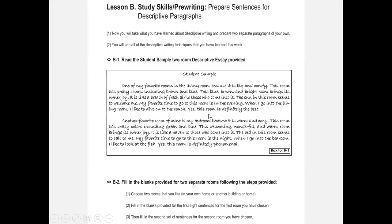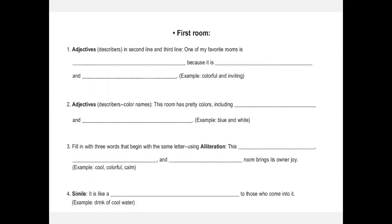The student sample continues for the second paragraph about the bedroom. Students are going to do the assignment — fill in the blanks provided for two separate rooms. Here we have fill-in-the-blank outlining — this is their framework. We're not just saying 'write two paragraphs about two rooms and don't forget alliteration, similes, metaphors, personification, adjectives, and adverbs.' Instead, we give them the framework to make them succeed at putting those things in.